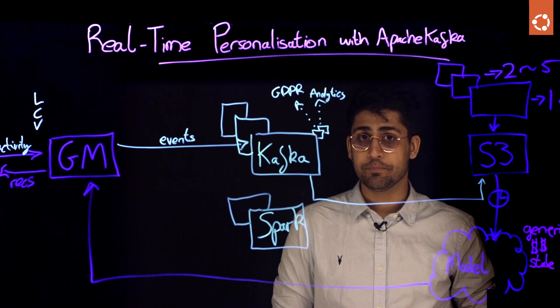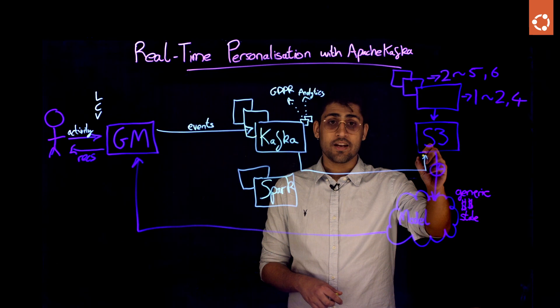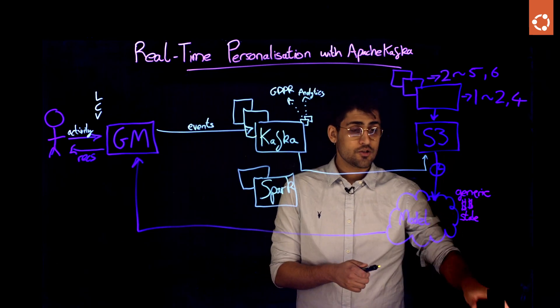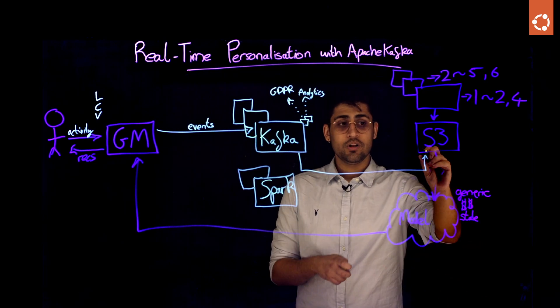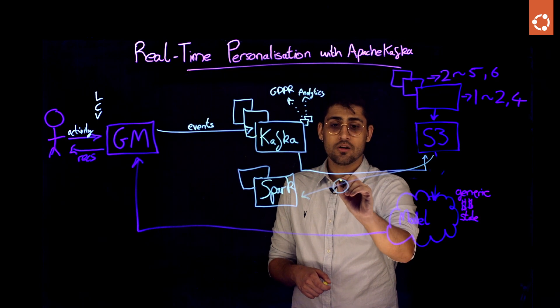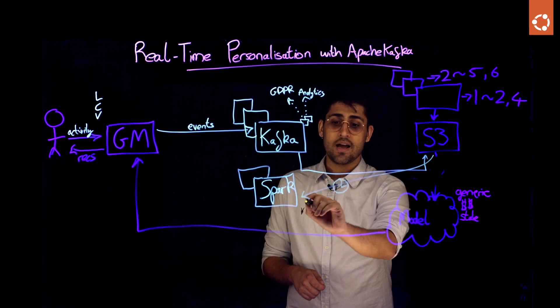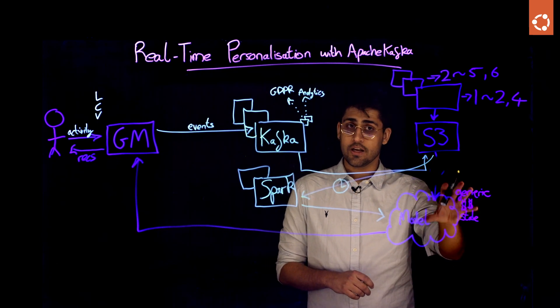How would that look in reality? What we can do is, just like before, instead of having this training here, we can pull data from S3 and feed it into Spark on a similar batch job, and that will output a similar content-to-content model like we had before.